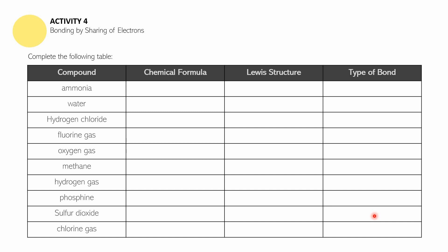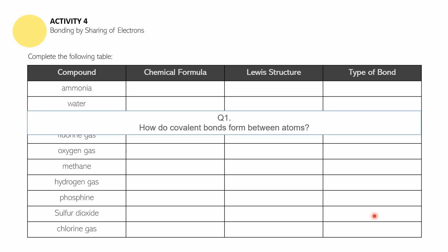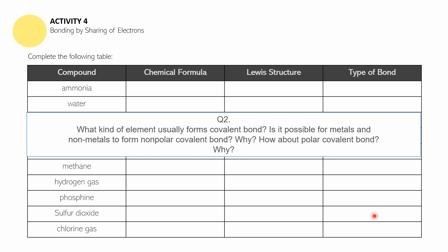Once you are ready to check your work, answer the following questions. Question one: how do covalent bonds form between atoms? Question two: what kind of element usually forms covalent bonds? Is it possible for metals and non-metals to form non-polar covalent bonds? Why? How about polar covalent bonds? Why? Pause the video if you need more time.